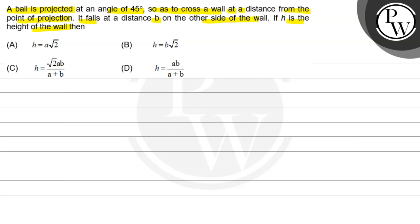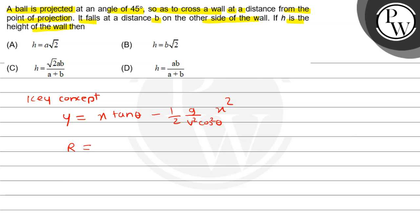The key concept is that we have to understand the equation of trajectory. Equation of trajectory क्या होती है? y is equal to x tan θ minus half of g divided by v² cos²θ times x². यह होती है हमारी trajectory की equation. और range of projectile होती है 2v² sin θ cos θ divided by g.